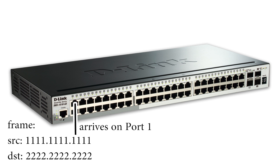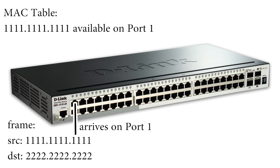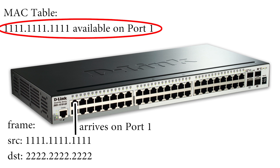The first time the switch receives a frame from the PC or from the router — perhaps a DHCP request, any frame — the switch adds a source entry for that particular MAC address from the port that it received the frame on. That address is now in the switch's MAC table with port 1, address 1. Very simple.